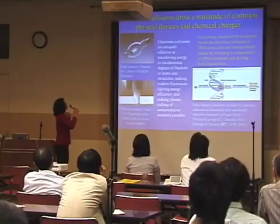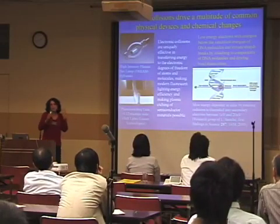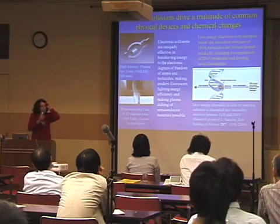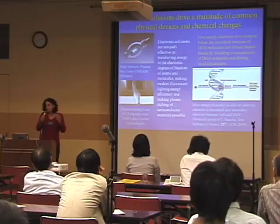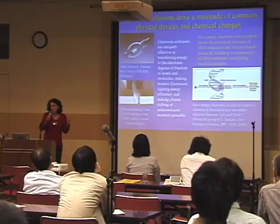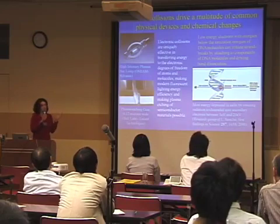So let's talk about electron collisions first. Why are we interested in them? Well, all around us, electron collisions drive a multitude of common physical devices and chemical changes. Electron collisions are uniquely effective in transferring energy into the electronic degrees of freedom of atoms and molecules. That's what makes certain phenomena such as modern fluorescent lighting so energy efficient nowadays.